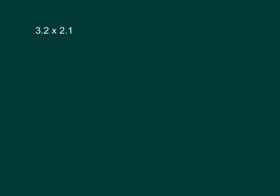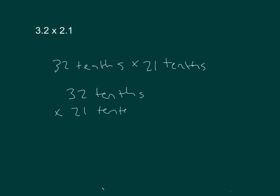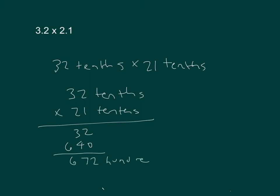I can also solve this problem by writing it in unit form. My expression is 32 tenths times 21 tenths. Tenths times tenths is hundredths, which equals 6.72. So 3 and 2 tenths times 2 and 1 tenths is equal to 6 and 72 hundredths.